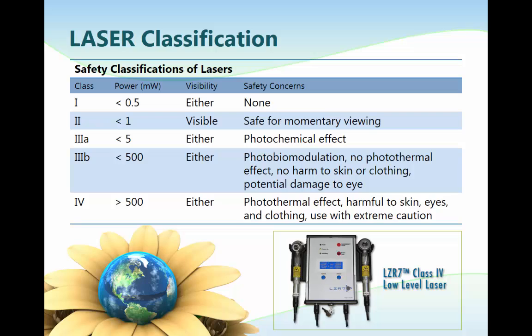The greater the power of the laser, the greater the potential danger. Class 1 lasers have a power of less than 0.5 milliwatts. There are both visible and non-visible laser beams in this class. These lasers are exempt from most control measures, and the laser output is either safe to the human eye or is contained within the device. No special labeling is required for a Class 1 laser.